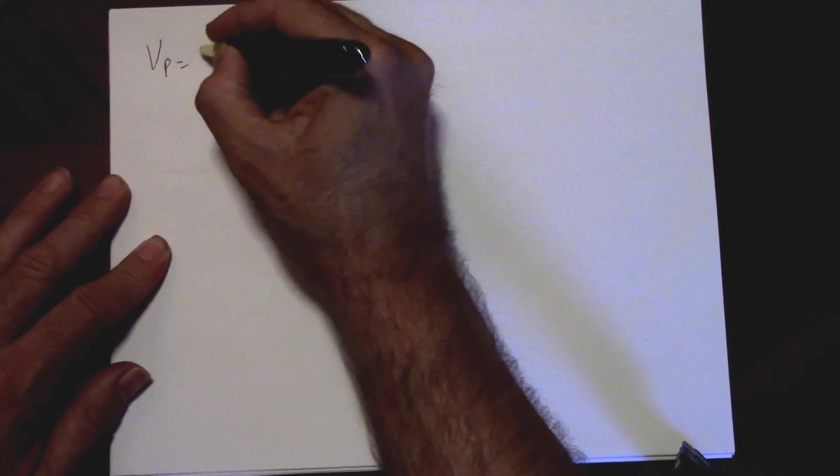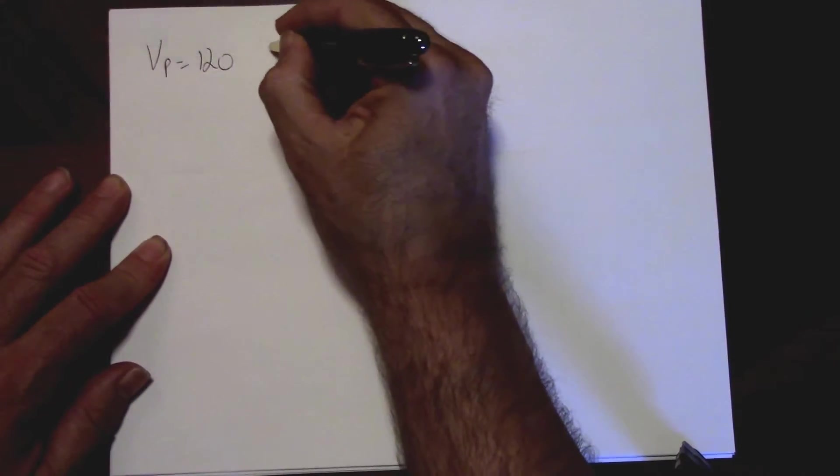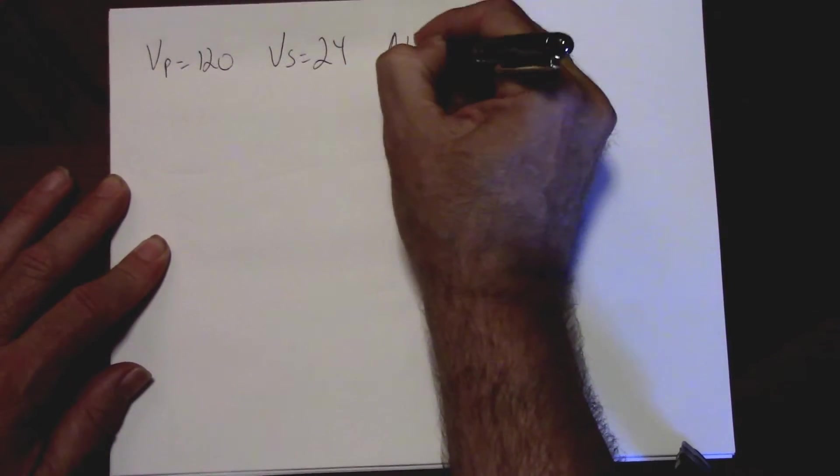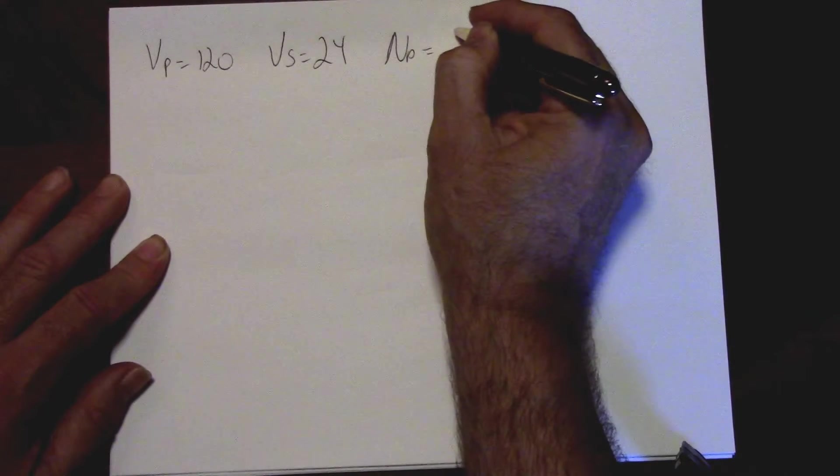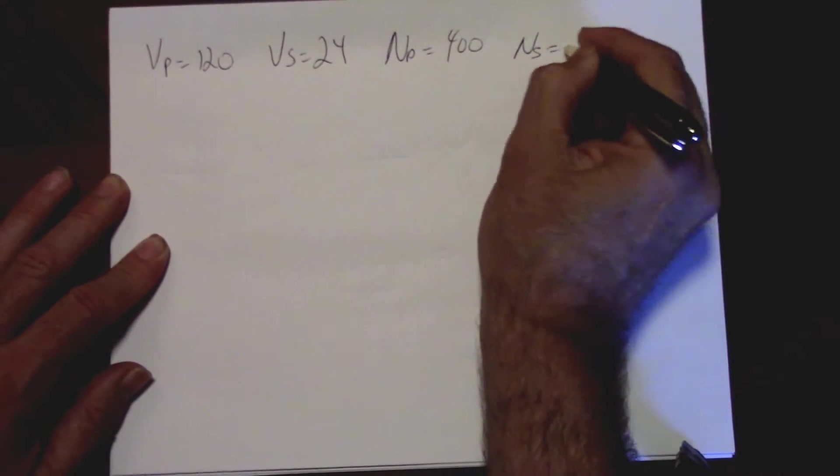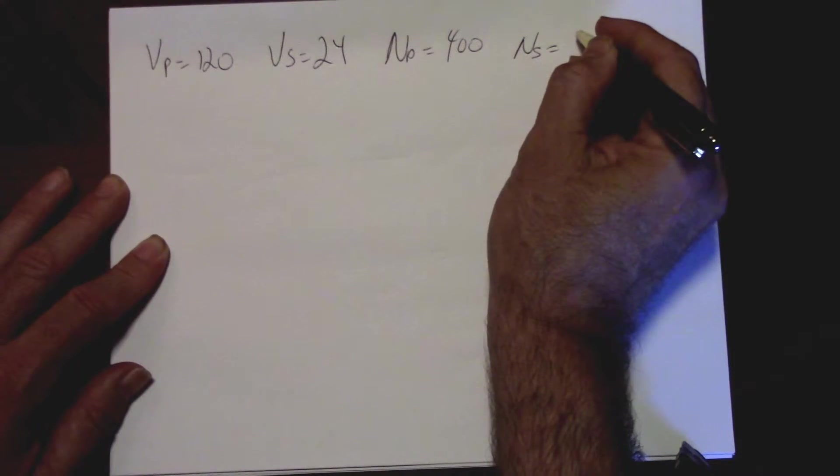Same situation. Voltage primary 120, voltage secondary 24. Number of turns on the primary, we'll drop it 200 and go 400. Number of turns on the secondary gives me X.